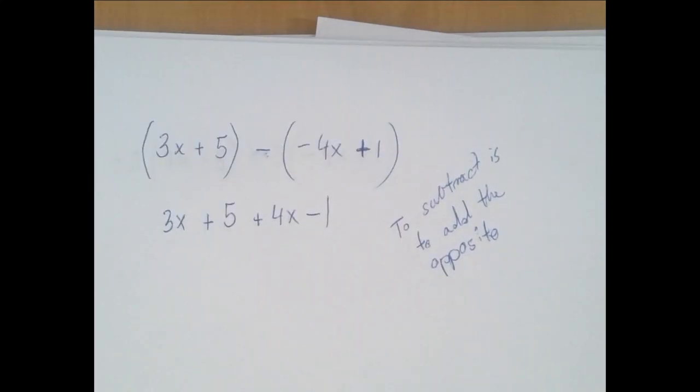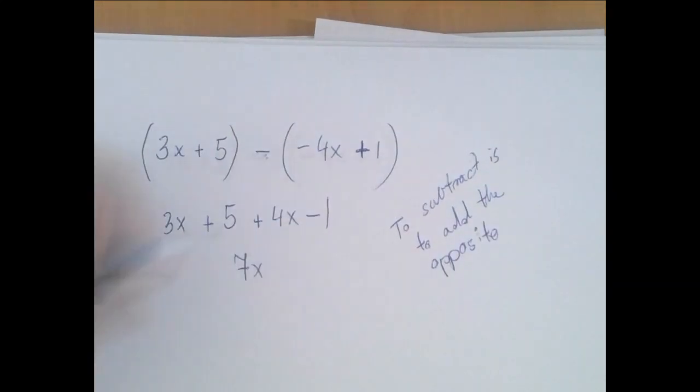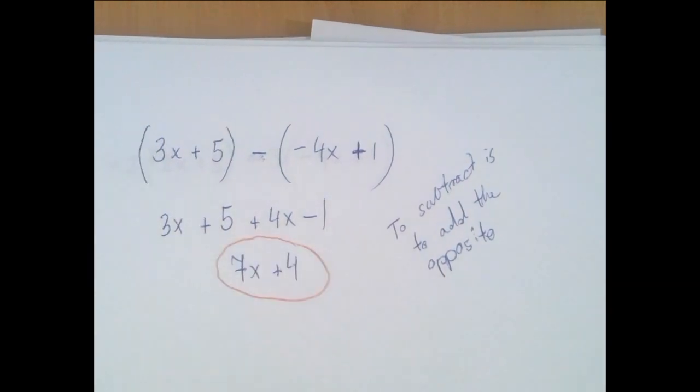And now we combine like terms. 3x plus 4x is 7x and 5 and negative 1 is 4. Therefore, the correct answer is 7x plus 4.